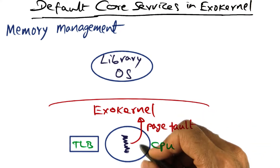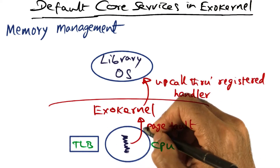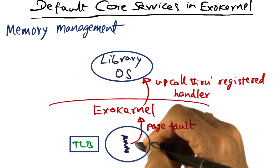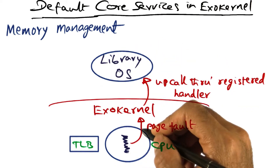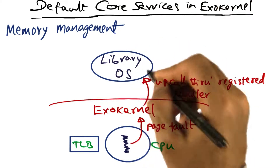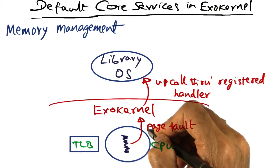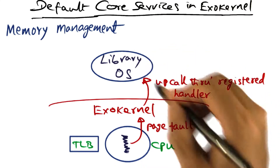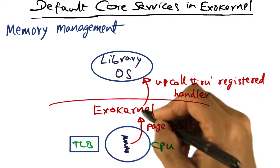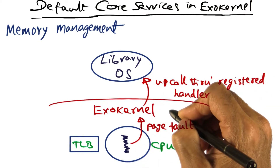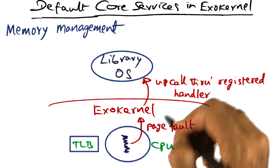But this thread may incur a page fault. When it does, the page fault is first fielded by exokernel. Exokernel knows which library operating system is currently executing on the CPU, but it has no knowledge of processes within a library operating system. It knows only that a page fault was incurred, and it can kick it up to the library operating system through a registered handler. We will talk about how these handlers are known to exokernel later on.